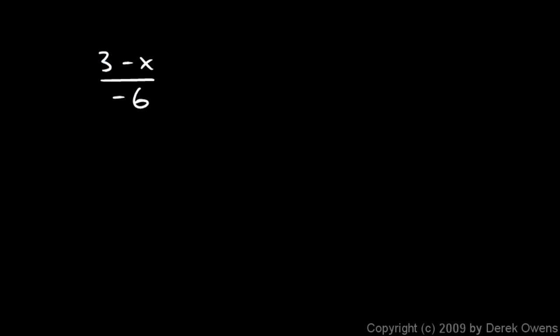The rule to remember here is that only things that are multiplied can cancel out from the top and the bottom. And, this is not multiplication there. That's a subtraction. 3 minus x. Or, you could think of it as addition. 3 plus negative x. But, it's not multiplication. Only factors can cancel.